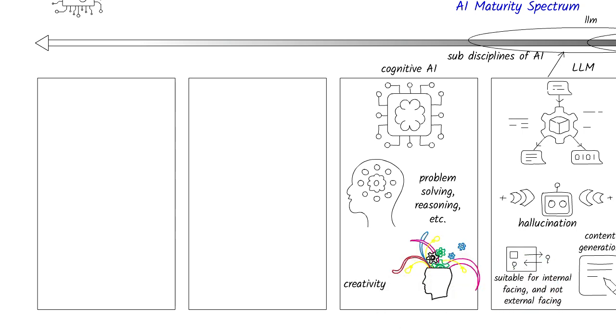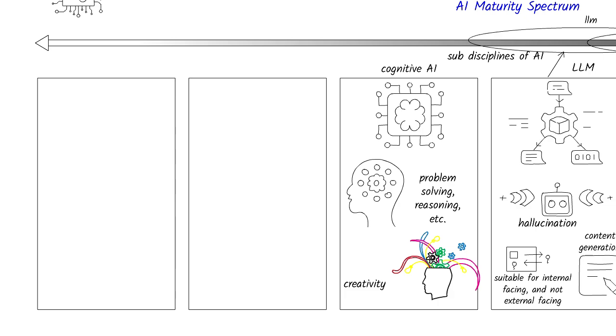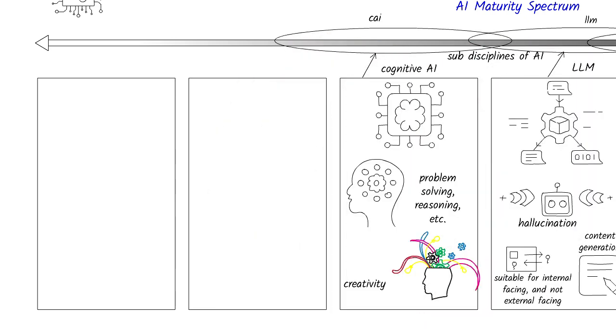AI systems could generate entirely new ideas or concepts pushing the boundaries of creativity and innovation. But that remains speculative and mainly in the realm of academic research. Here's where Cognitive AI is on the maturity spectrum.